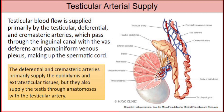Testicular arterial supply. Testicular blood flow is supplied primarily by the testicular, deferential, and cremasteric arteries, which pass through the inguinal canal with the vas deferens and form a venous plexus. The deferential and cremasteric arteries primarily supply the epididymis and extra-testicular tissues, but they also supply the testes through anastomosis with the testicular artery.